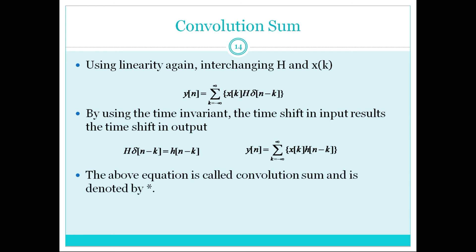This equation is called the convolution sum and is denoted by the star symbol. So y of n equals x of n star h of n, which equals sigma from k equals minus infinity to infinity of x of k times h of n minus k. The convolution sum is the summation of the multiplication of the input and the time-shifted impulse response of the system. It gives the output of the LTI system. If we know the impulse response and the input of the system, we can find the output using the convolution sum.